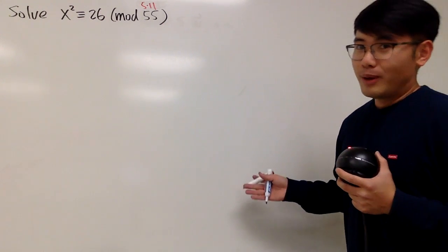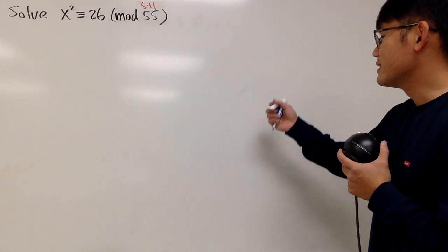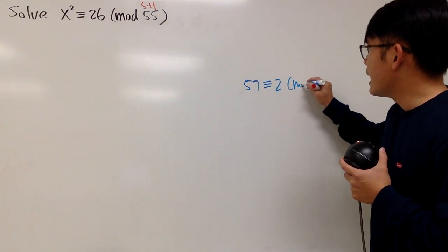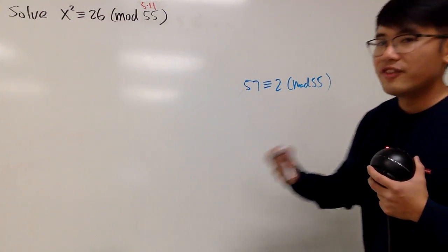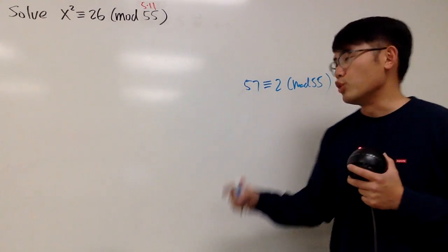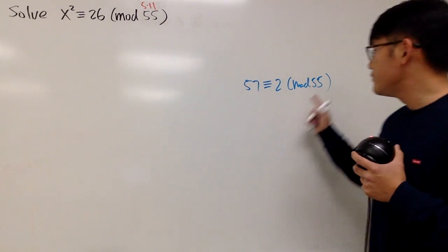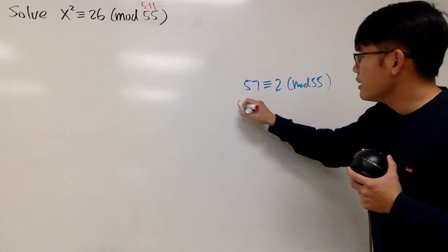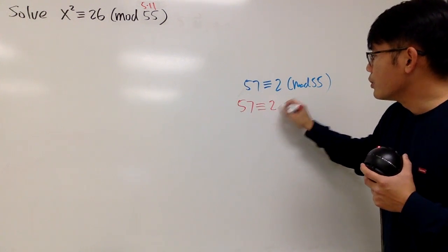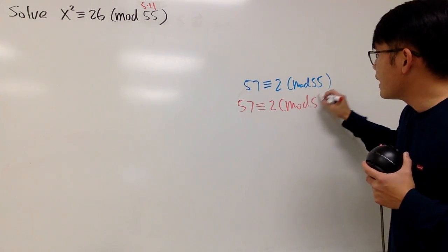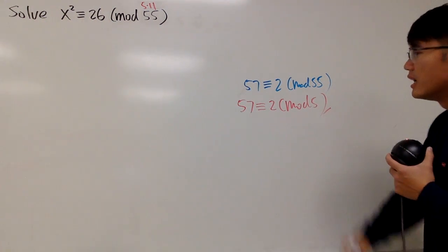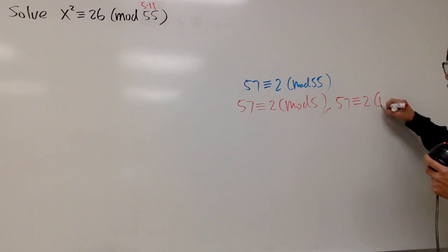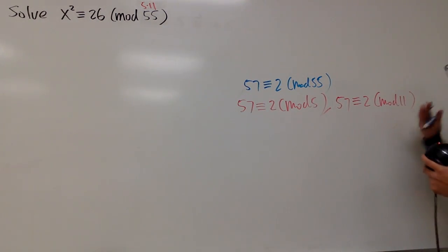Let me show you an example to illustrate the idea. First of all, let's take a look at the number 57. This is congruent to 2 in the mod 55 world, because 57 divided by 55 gives you 1 with a remainder of 2. And because 55 is the same as 5 times 11, we can say for sure that 57 is congruent to 2 even in the mod 5 world. And we can also say 57 is congruent to 2 in the mod 11 world as well.